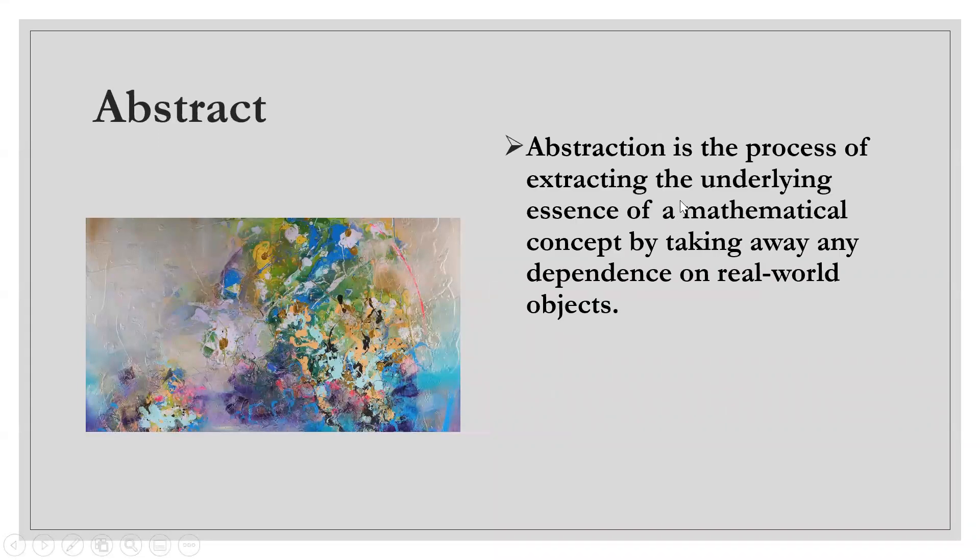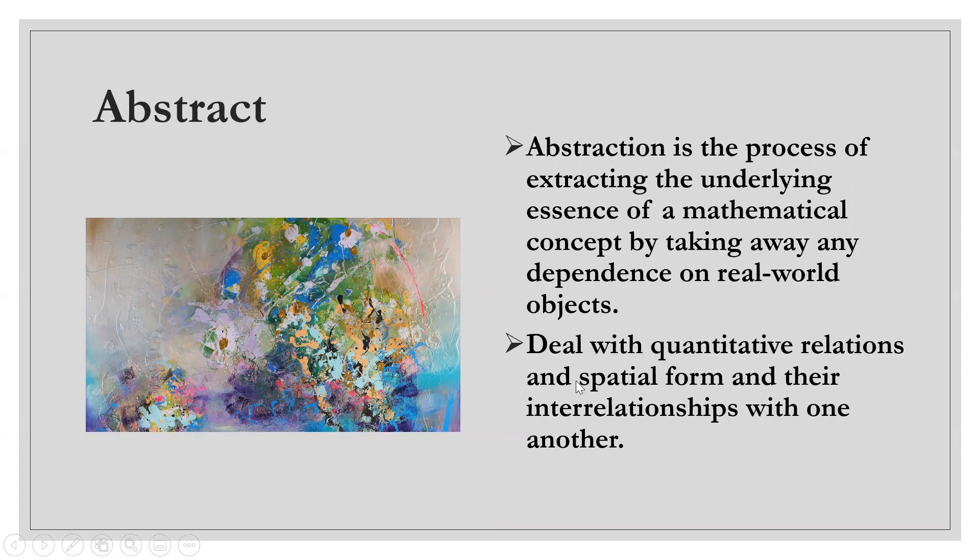Now let's talk about the abstract. Abstraction is the process of extracting the underlying essence of mathematical concepts by taking away any dependence on a real-world object. It deals with quantitative relations and spatial form in their interrelationship with one another. Look at this painting. It is abstract.